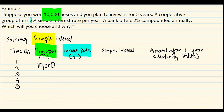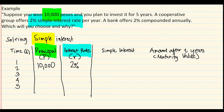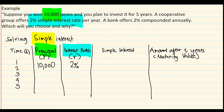The interest rate is 2% simple interest rate, not the 2% compounded annually. So we have 2% for each of the five years. The formula for simple interest is I = P × r × t.